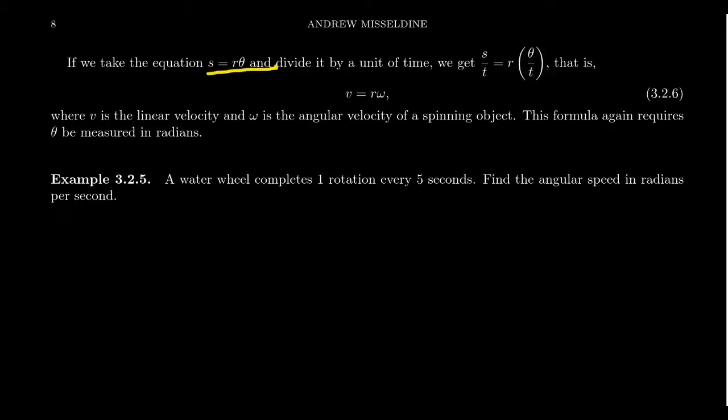So the arc length formula, if you divide it by time, this gives you the angular velocity formula. This tells you that linear velocity is equal to the radius times angular velocity. And of course, you can do variations of this, that angular velocity ω is equal to V over R and things like that. It's an equation you could use.